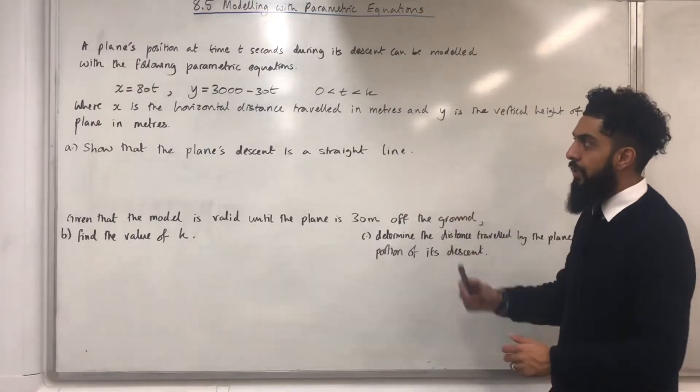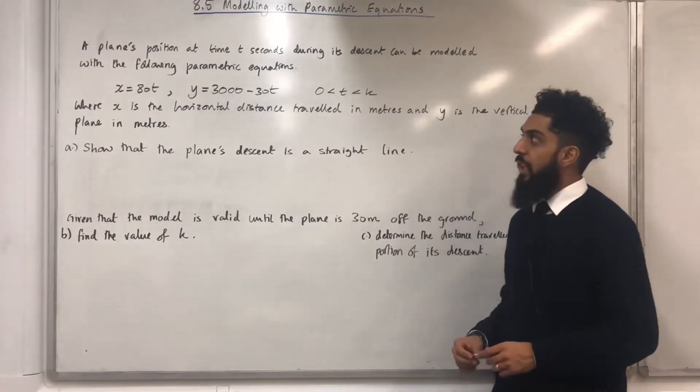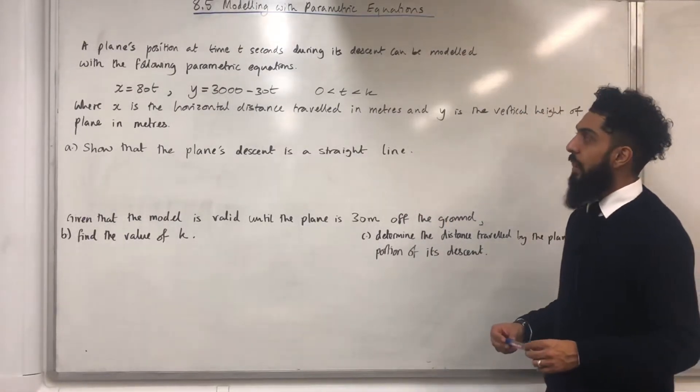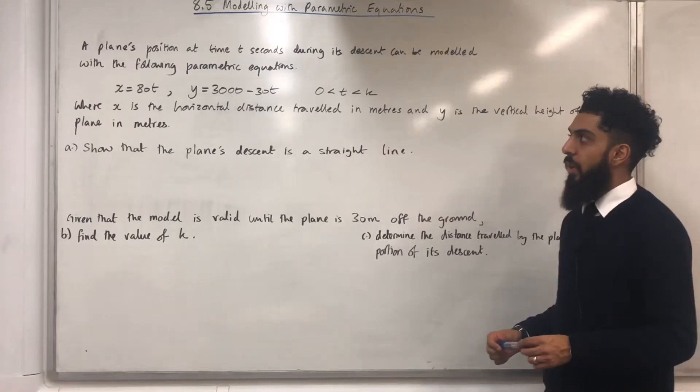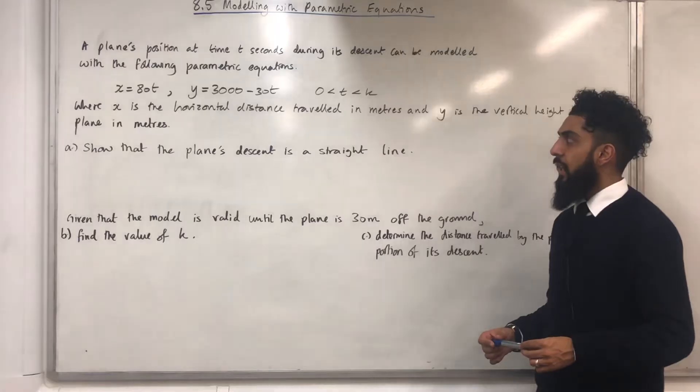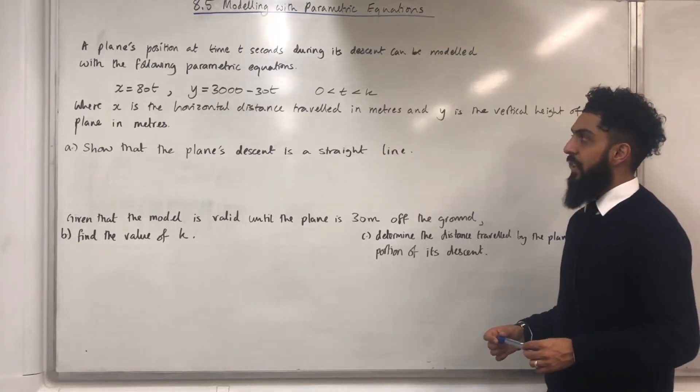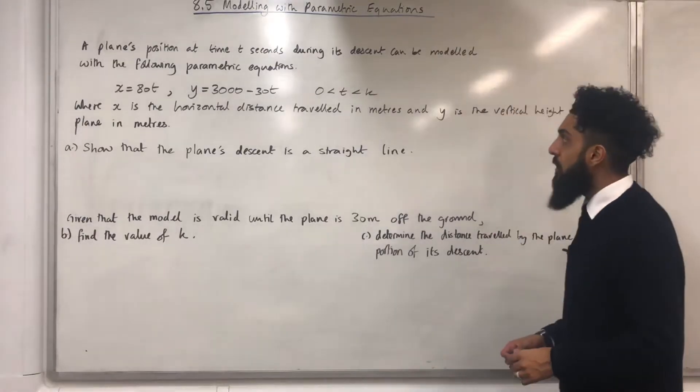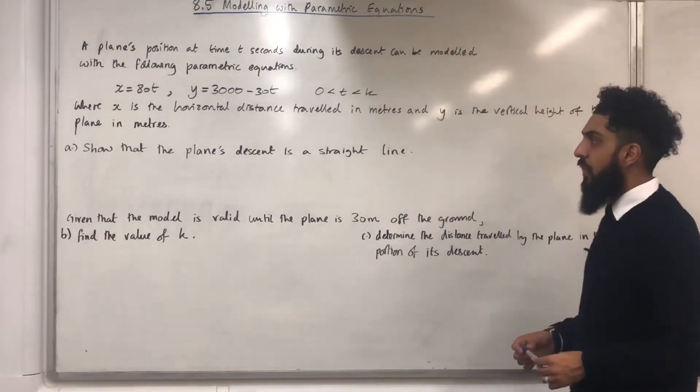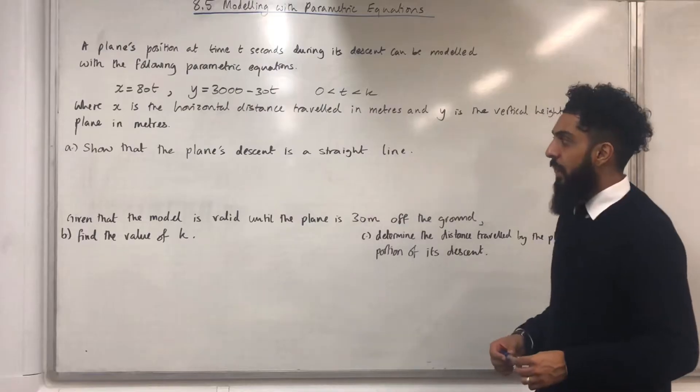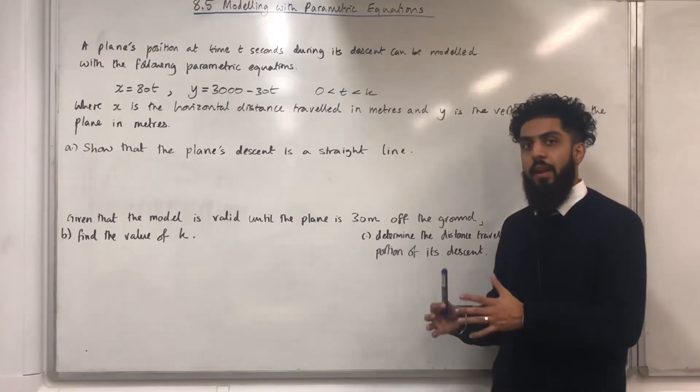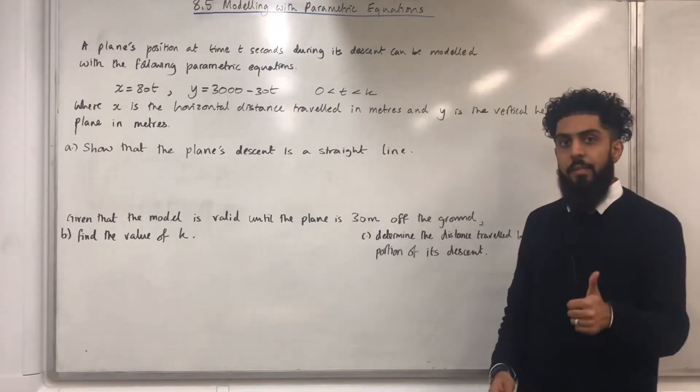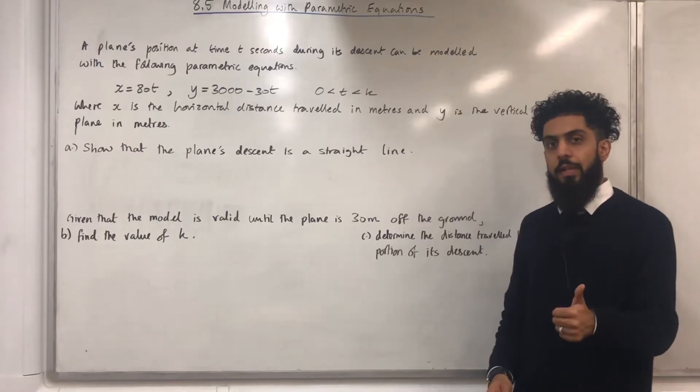Here is a past exam question. A plane's position at time t seconds during its descent can be modeled with the following parametric equations: x equals 80t, y equals 3000 minus 30t, t is more than 0 but less than k. Where x is the horizontal distance traveled in meters and y is the vertical height of the plane in meters. Part A shows that the plane's descent is a straight line.